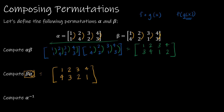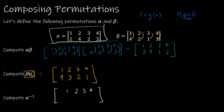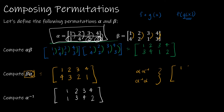Now for an inverse, all we're going to do is say what mapped to that value — so I'm looking at alpha. In alpha, which value mapped to one? Well, one mapped to one. What mapped to two? Three mapped to two. What mapped to three? Four mapped to three. What mapped to four? Two mapped to four. Now, if you take alpha∘alpha-inverse or alpha-inverse∘alpha and multiply those, either result should give you the identity, which would be one maps to one, two to two, three to three, and four to four. I will leave that work for you to do.